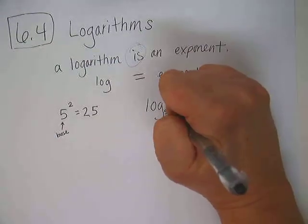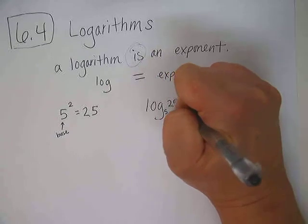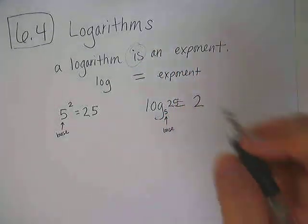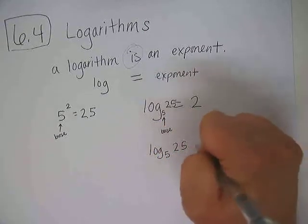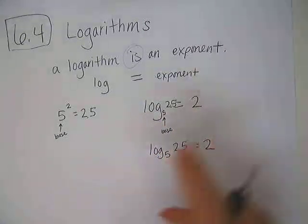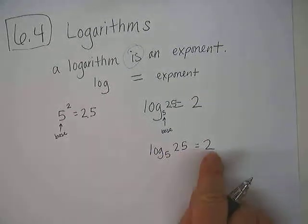And then the other number, the 25, goes in the empty spot. I didn't leave a big enough empty spot. So let me rewrite this so it looks better. Log base 5, 25, equals 2.